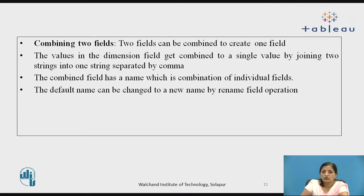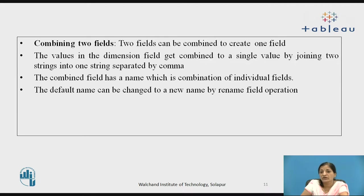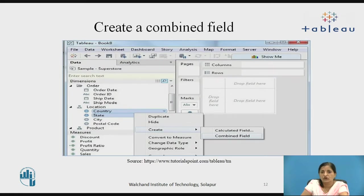When you want to combine two fields, two fields can be combined to create one field. The values in the dimension field get combined to a single value by joining two strings into one string separated by a comma. The combined field has a name which is a combination of the individual fields. The default name can be changed to a new name by using the rename field operation. In the superstore example, we have chosen country and state as the two fields to be combined. When you right-click on these two fields, you get an option for 'Create', and in create you have an option for 'Combined Field'.